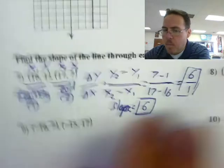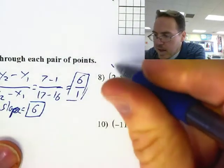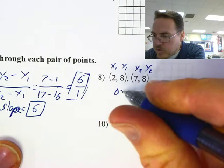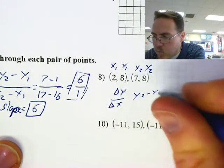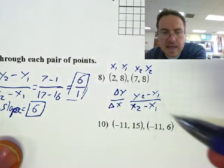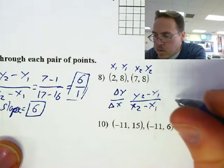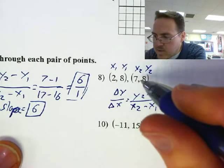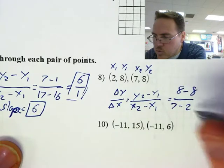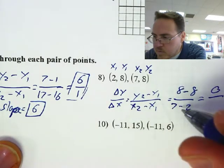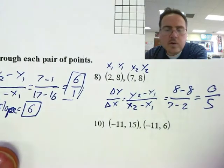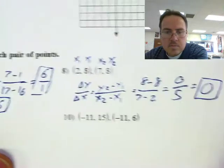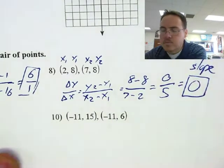Number 8. This will be x1, y1, x2, y2. The change in Y over the change in X: y2 minus y1 over x2 minus x1 gives 8 minus 8 over 7 minus 2, which is 0 over 5. Zero divided by 5 — how many times does 5 go into 0? So this one has a slope of 0.